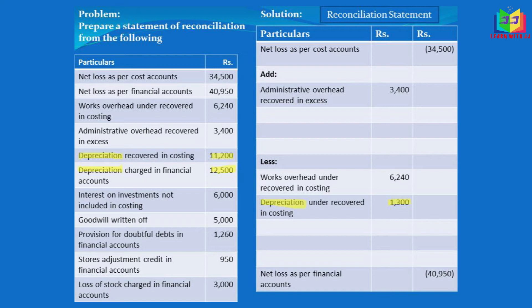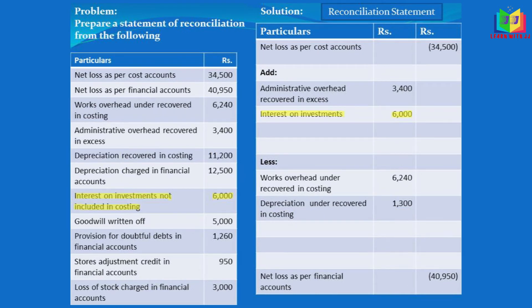In both books the depreciation was given, so we have to find the difference: 12,500 minus 11,200 equals 1,300. This 1,300 is understated in the cost book — in the cost book it is only 11,200 while in the financial book it is 12,500. Understated expenses in the cost book will increase the profit, so in order to rectify that we will subtract it.